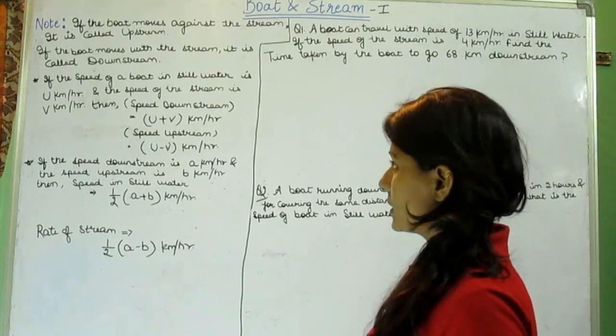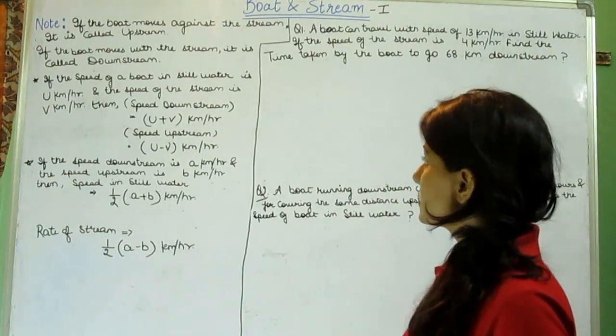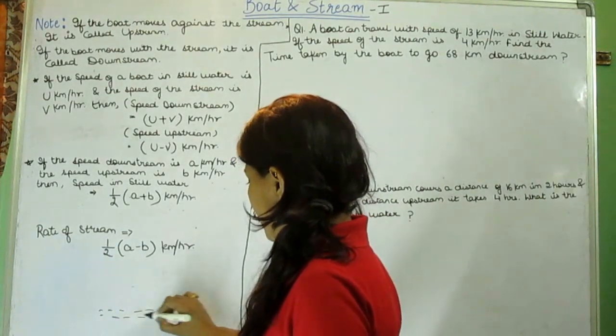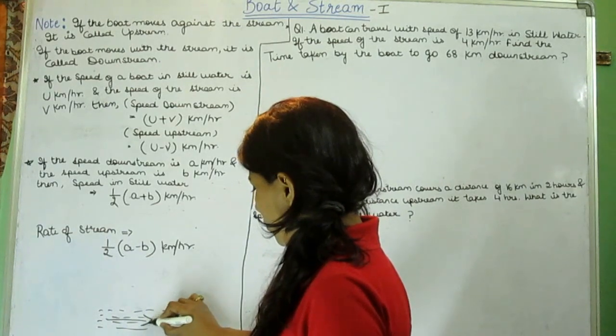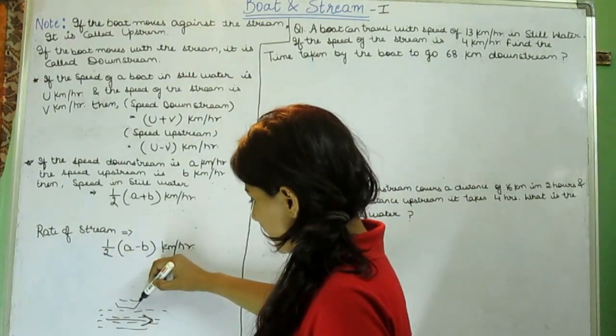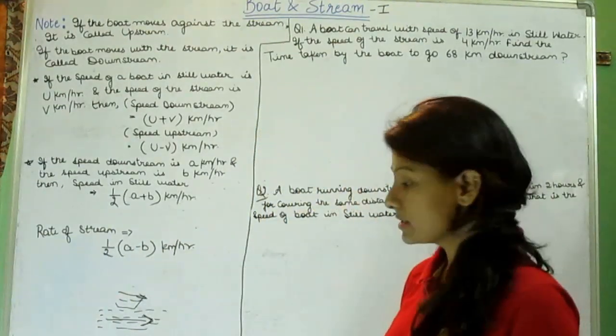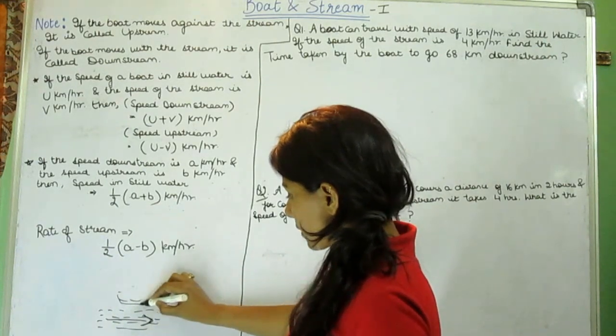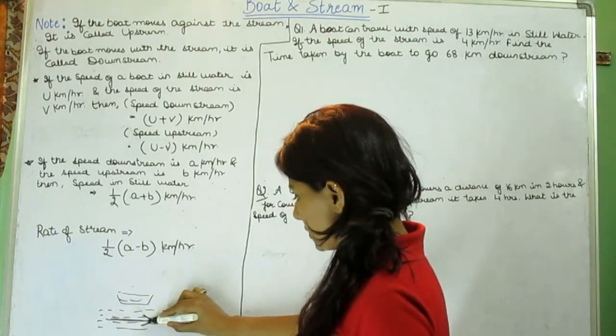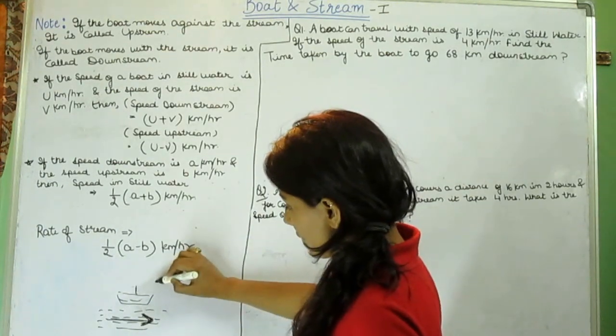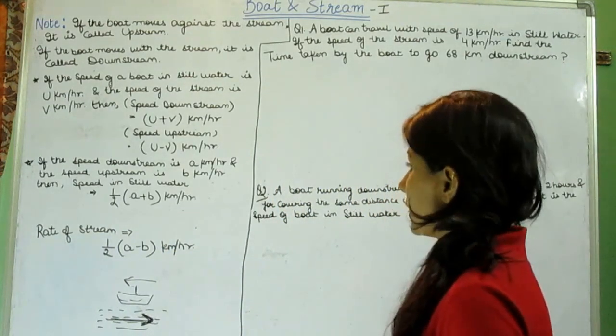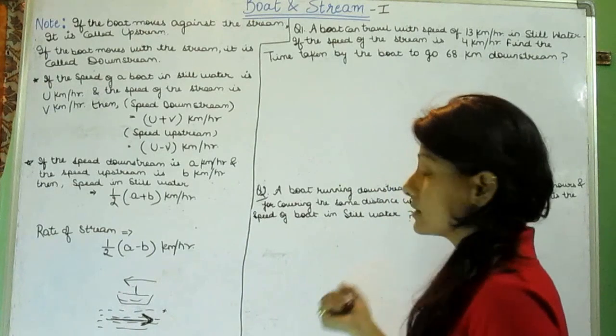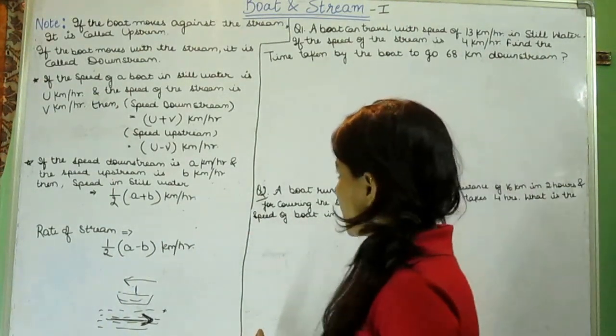If the boat moves against the stream, it is called upstream. If the boat moves with the stream, it is called downstream. If this is the stream and this is the flow of water, and a boat moves in the same direction the water is flowing, it is going to take less time. But if a boat moves against the stream, it takes much time. So when the boat moves against the stream, it's called upstream, and when the boat moves with the stream, it's called downstream.